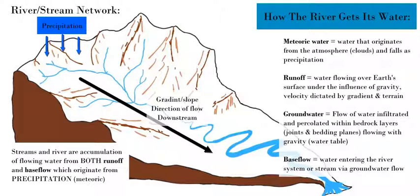There are different types of drainage basins based on topography and the geology of the rock. You also get base flow — the amount of water fed into the stream or river by groundwater. This is not meteoric water, but water from the ground that originally comes from precipitation via infiltration, percolation, and interflow.